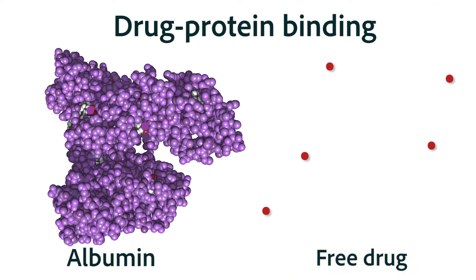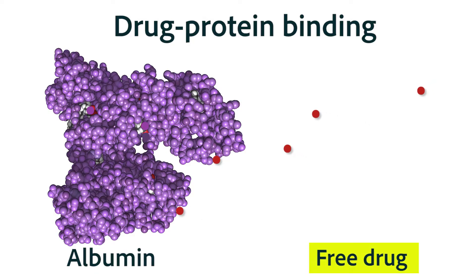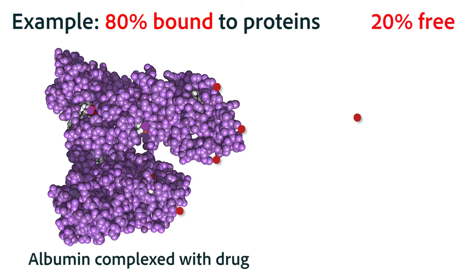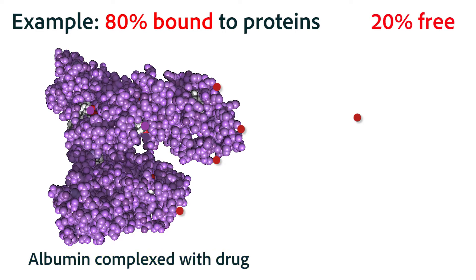Often times before the drug even gets to the liver, it acts as a protein carrier molecule. Many of our drugs are carried by proteins such as albumin or the globulins, especially if the drug is highly lipophilic — in other words, fat soluble. Each drug will have a different affinity to that protein carrier molecule, and as such each drug will have a certain percentage that is normally bound to proteins.